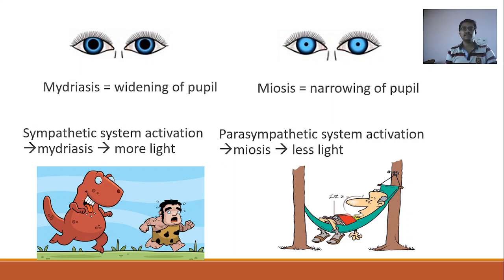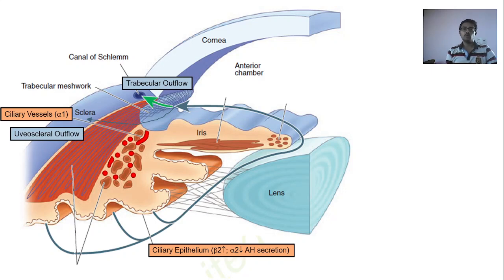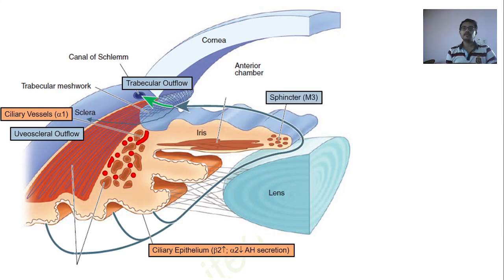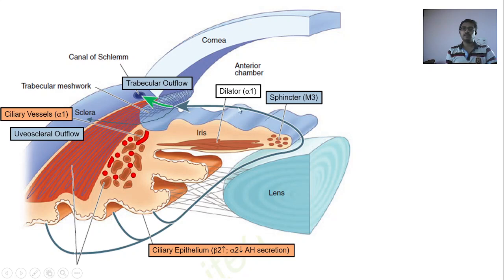How do these two systems produce mydriasis and miosis? Both systems act on the iris of the eye. There are two groups of muscles: the sphincter pupillae and the dilator pupillae. The sphincter pupillae has M3 receptors. Whenever there is parasympathetic activation, acetylcholine sits on the M3 receptors and there is contraction of the sphincter pupillae leading to miosis. Whenever there is sympathetic system activation, noradrenaline gets released and sits on alpha-1 receptors located on the dilator pupillae, causing its contraction and leading to mydriasis.